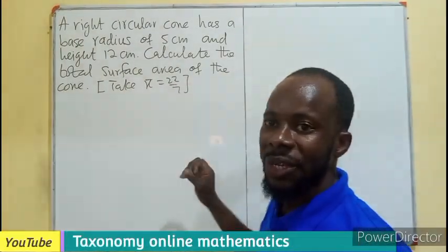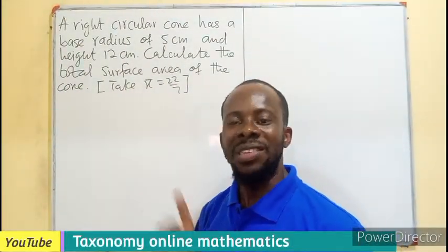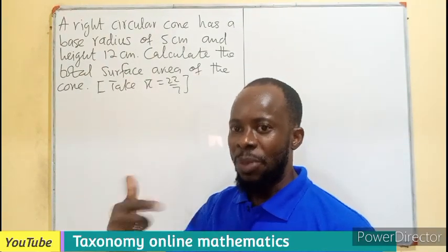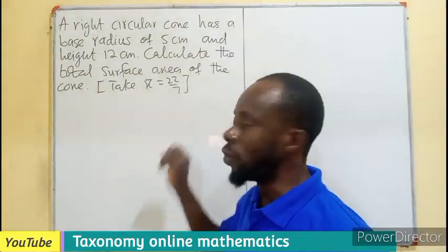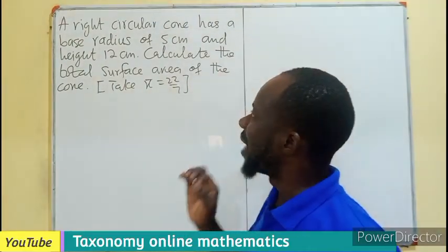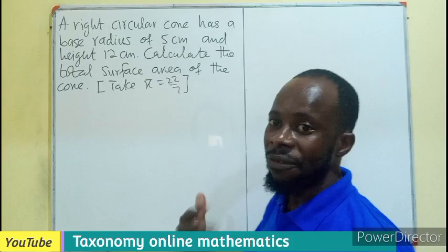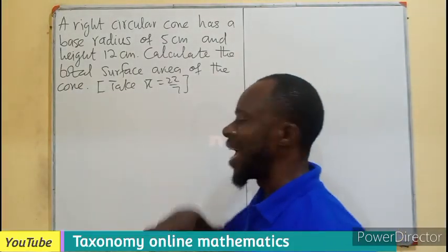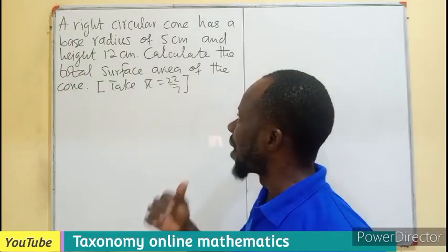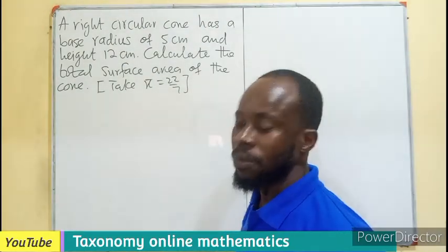Let's provide an answer to this question under the total surface area of a pyramid, the episode we are doing, and this one is under cone. So a right circular cone has a base radius of 5 centimeters and the height of 12 centimeters. Calculate the total surface area of the cone.